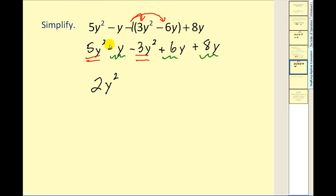Again, it might be helpful to put in the coefficient of 1 there. So we have a negative 1y plus 6y, that would be 5y, plus 8y. The result is 13y.